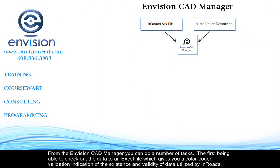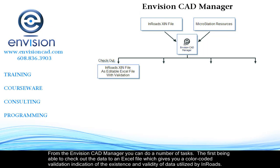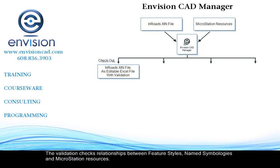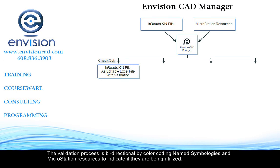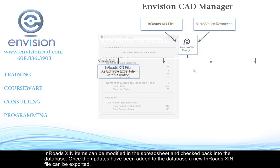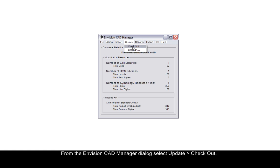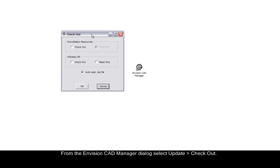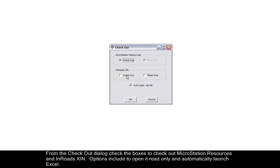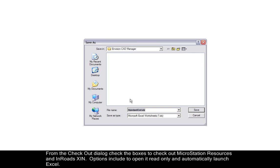From the Envision CAD Manager, you can do a number of tasks. The first is being able to check out an Excel file. Validation checks are done on the Excel file between feature styles, named symbologies, and MicroStation resources. The validation process is bidirectional between the named symbologies and MicroStation resources. The InRoads XIN files can be modified in the spreadsheet and checked back into the database. From the Envision CAD Manager dialog, select Update Checkout. From the Checkout dialog, you can check out the MicroStation resources and InRoads XIN, with options to open it read-only and automatically open Excel.